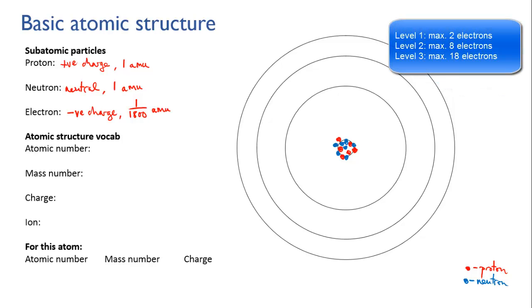The next level can hold eight. So we put our first two electrons in the first level and our remaining four in the next level.